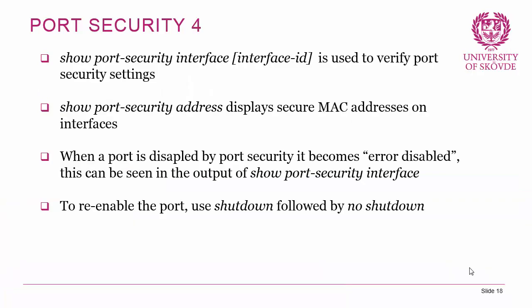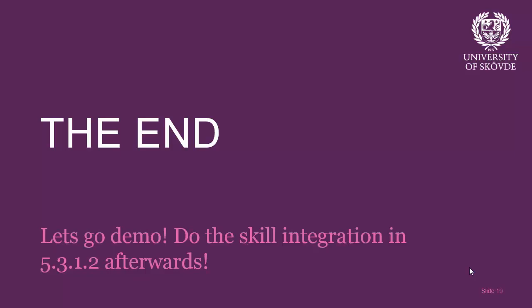To verify port security settings use 'show port-security interface [interface-id]' and 'show port-security address' to display secure MAC addresses on different interfaces. When a port is disabled by port security it becomes error-disabled, which you can see in the 'show port-security interface' output. To re-enable the port, enter port configuration mode and do a 'shutdown' followed by 'no shutdown'.